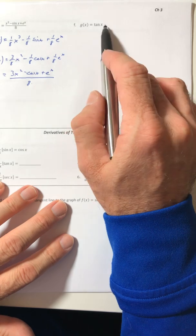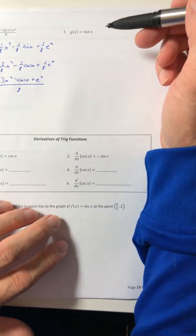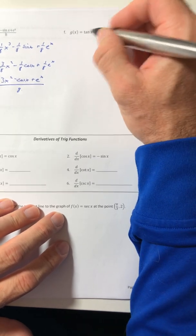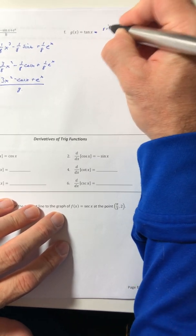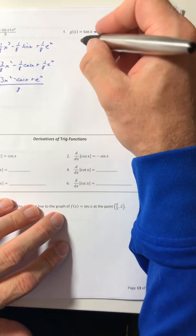All right. Now this last one, g of x equals tangent. We don't have a rule for tangent. At least not yet. Because remember, tangent is really a quotient of sine over cosine. Now you've got something to go off of.